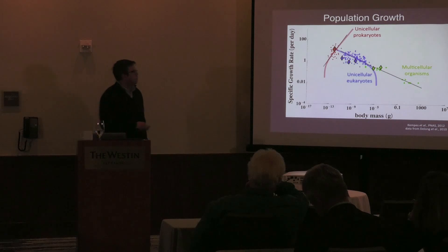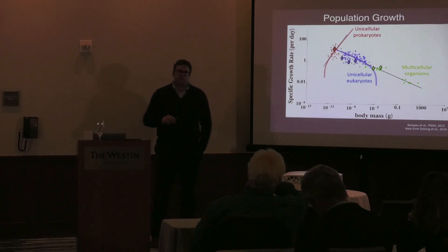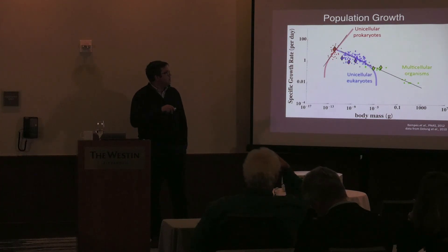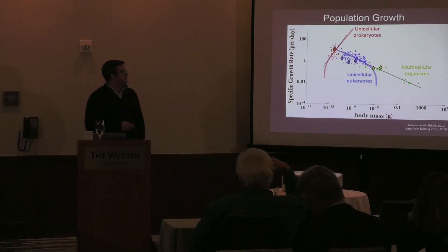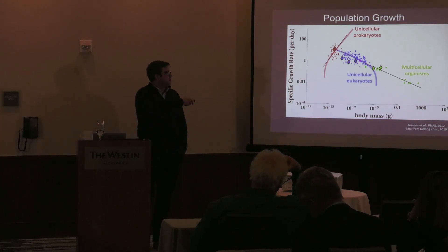One thing they predict are these shifts in the population growth rates across these three different categories. Where the unicellular bacteria, and I'm not showing the theory that predicts these curves, but we have a nice mathematical theory, a lot of the framework that Jeffrey talked about actually. In bacteria you have this increasing growth rate with increasing size. So the bacteria are speeding up in metabolic rate with increasing size. The unicellular eukaryotes then decrease in metabolic rate with increasing size. And that continues all the way out to multicellular life.